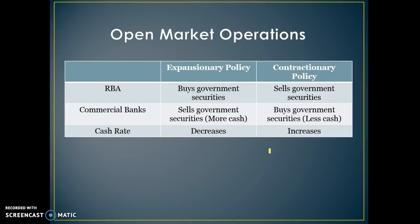For expansionary policy, the RBA buys government securities because they want to increase the amount of cash the banks have. The banks are the ones selling the securities to get more cash, and the cash rate will decrease.